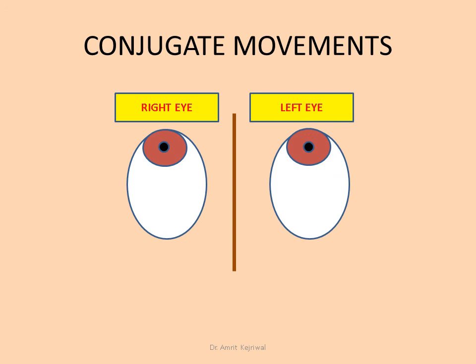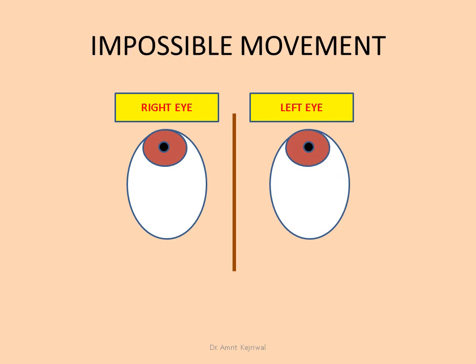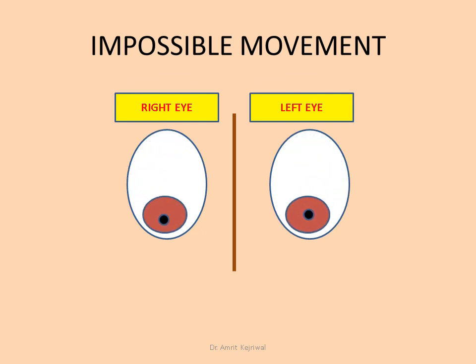Now, let us see one of the impossible movements. Both the eyes are moving in opposite directions, and this is a movement which is not possible in the normal eyes.